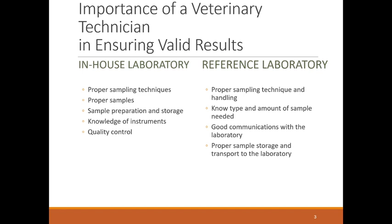What is important about your role as a veterinary technician is making sure that when we are taking blood we're getting valid results — results that mean something. Within the in-house laboratory, you need to make sure that you are using proper sampling techniques, that you've got the right spot to sample, that you're preparing the correct sample, storing it correctly, knowing what instruments to use, and following quality control measures so that every time you do a test you know that the answers you get mean something.